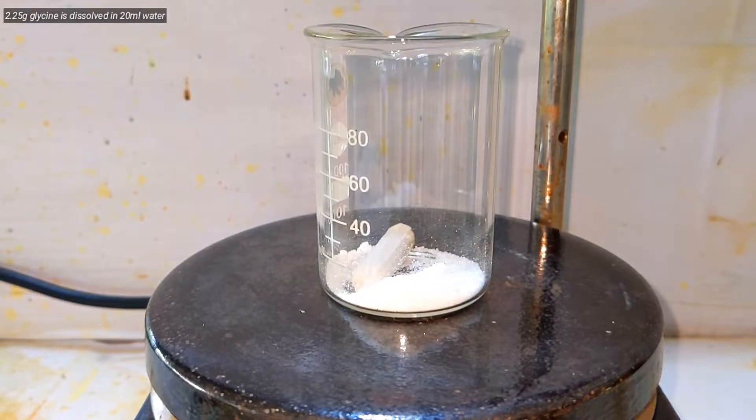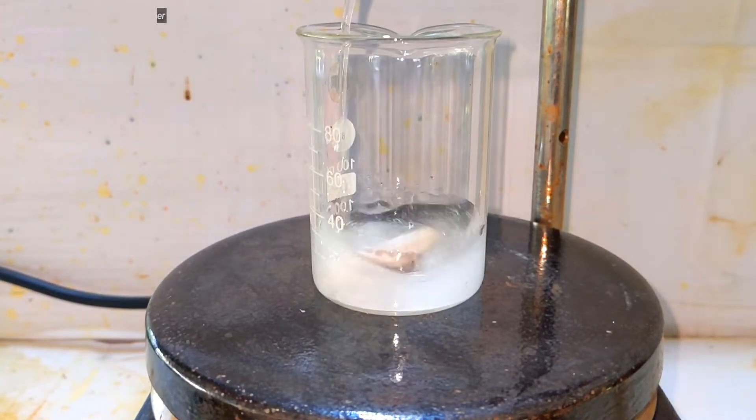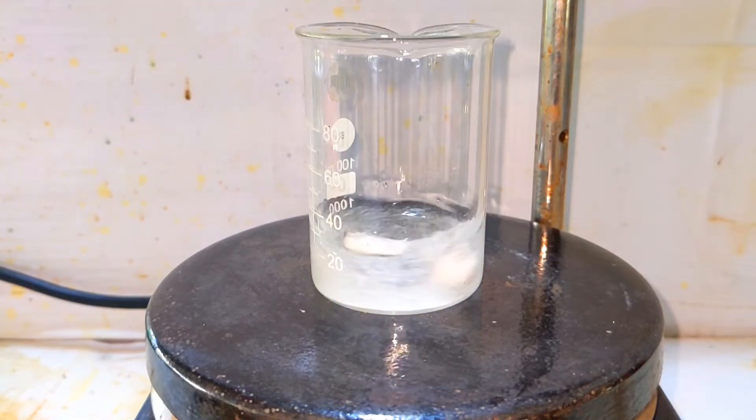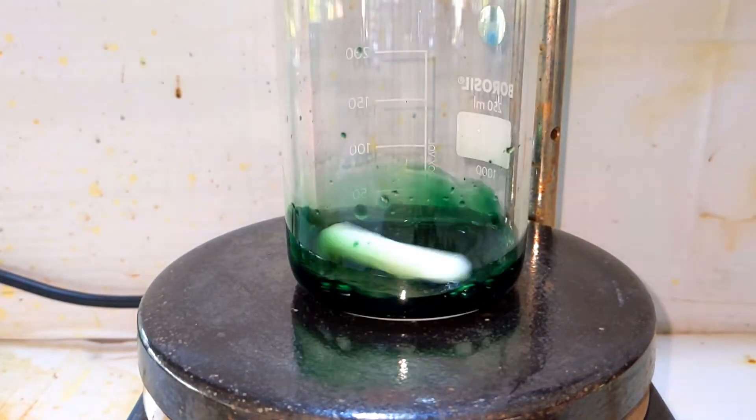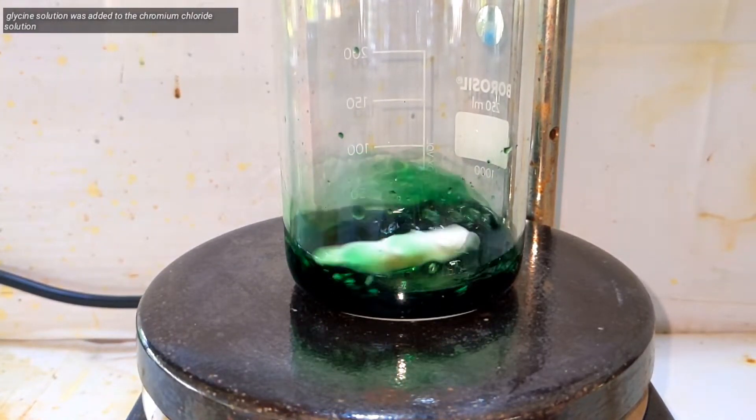Next in a separate beaker, 2.25 grams of glycine was dissolved in 20 milliliters of distilled water. Glycine is an amino acid. The glycine solution was then added to the chromium chloride solution with constant stirring.